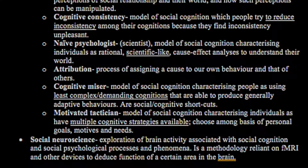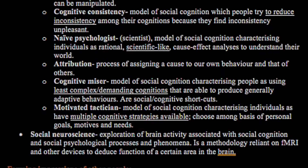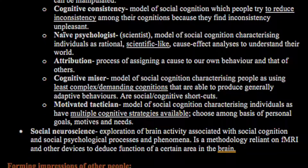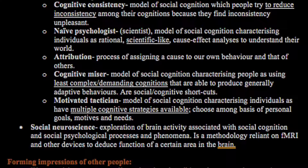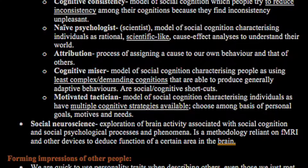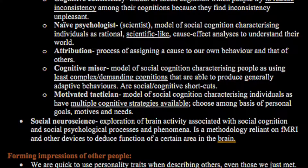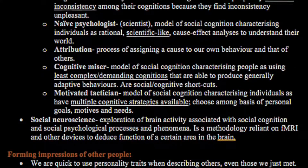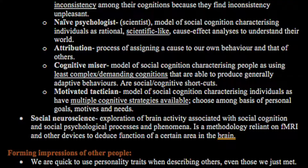There is also a motivated tactician, which is a model of social cognition characterising individuals as having multiple cognitive strategies available, choosing among them on the basis of personal goals, motives and needs. Then you have social neuroscience, which is an exploration of brain activity associated with social cognition and social psychological processes and phenomena. It is methodologically reliant on fMRI and other devices to deduce the function of certain areas in the brain.